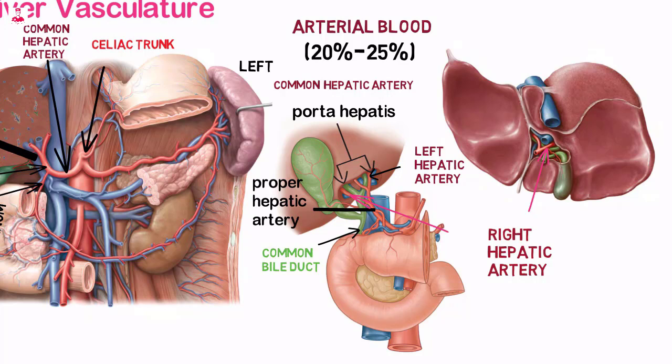The left hepatic artery approaches the liver in the lesser omentum and branches to supply the caudate, quadrate, and medial and lateral segments of the left lobe of the liver.